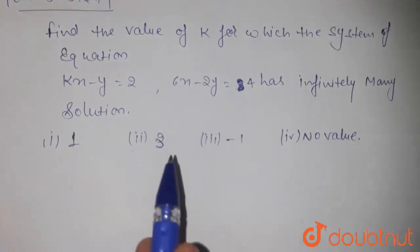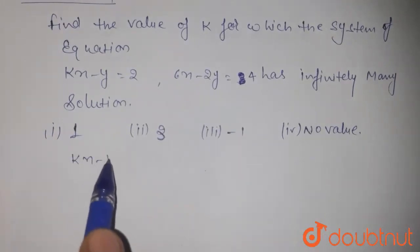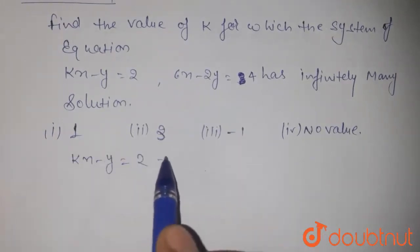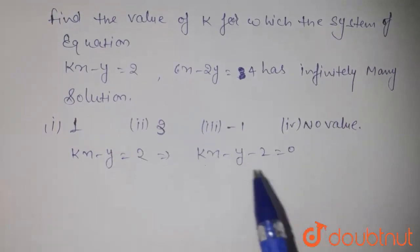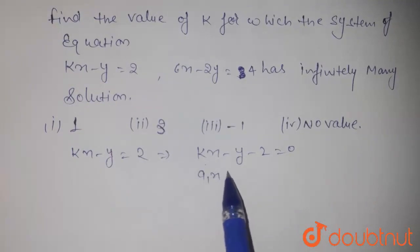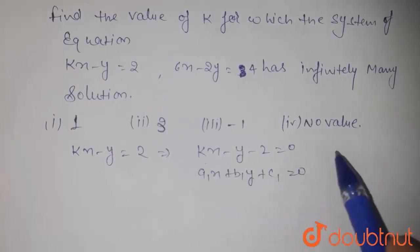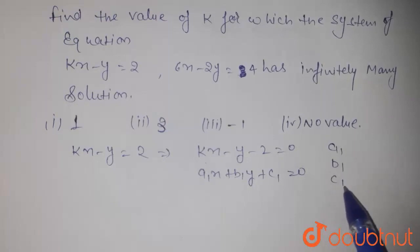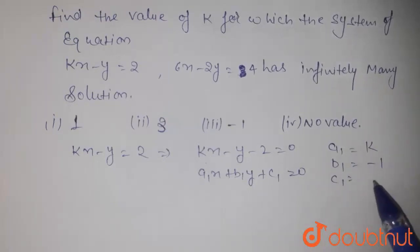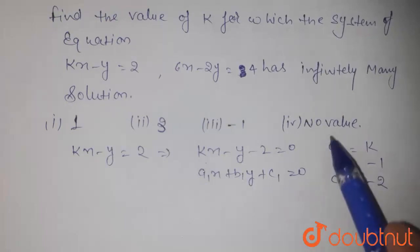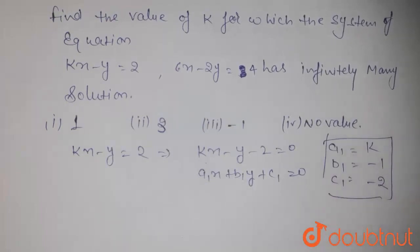First, we have two equations. The first is kx minus y equals 2, which equals kx minus y minus 2 equals 0. We compare this with a1x plus b1y plus c1 equals 0. So the values of a1, b1, and c1 are k, minus 1, and minus 2.